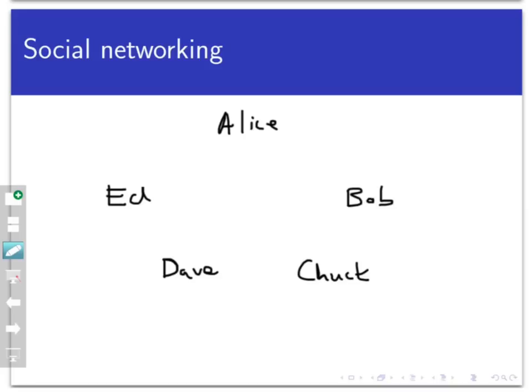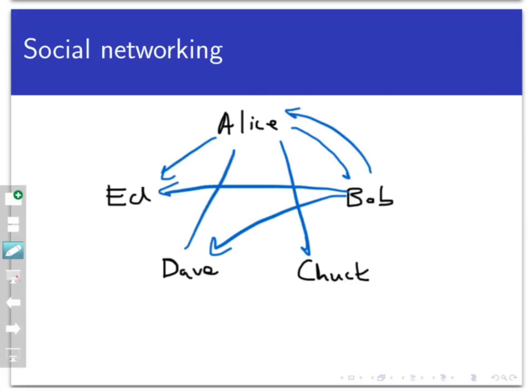Alice follows Bob, Chuck, and Ed. Bob follows Alice, Dave, and Ed. Chuck doesn't follow anybody—he's like a celebrity. Dave follows Alice, Bob, Chuck, and Ed. And finally, Ed follows Dave.